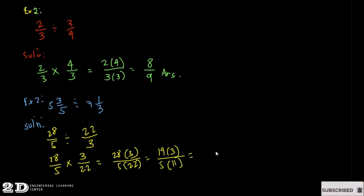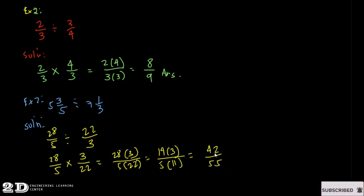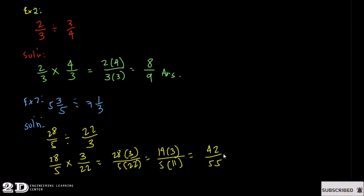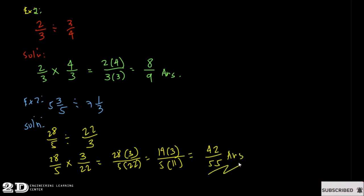So we have 14 times 3 over 11 times 5, which equals 42 over 55. This is already a proper fraction, so no need to convert to a mixed number. Checking for lowest terms: 42 over 55 is not divisible by 2 or 3, so 42 over 55 is our final answer.